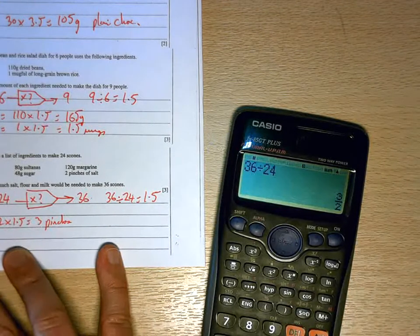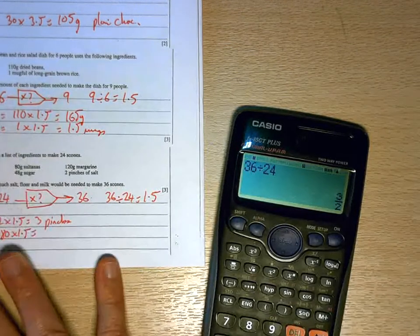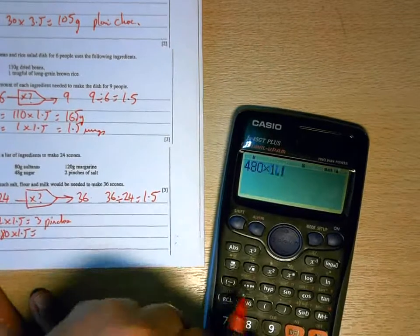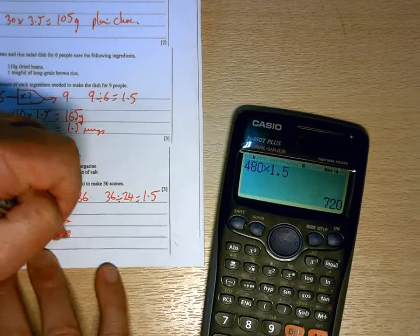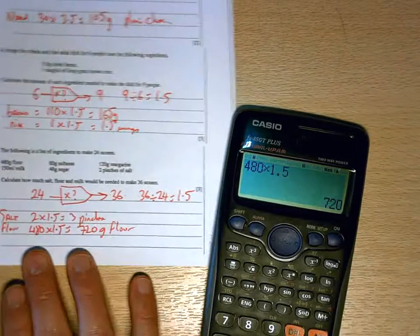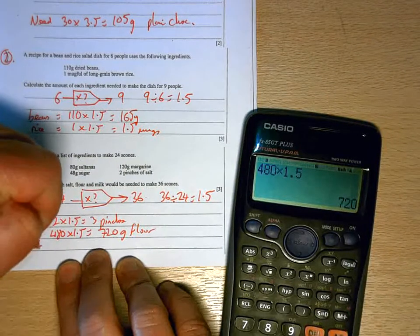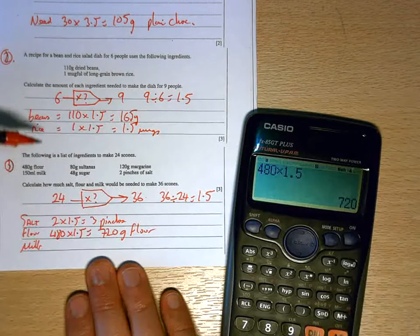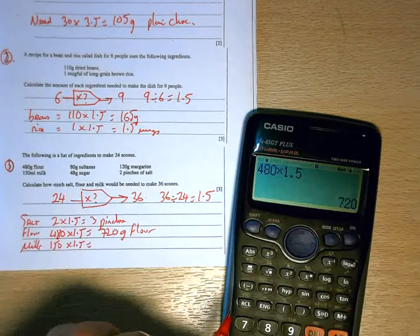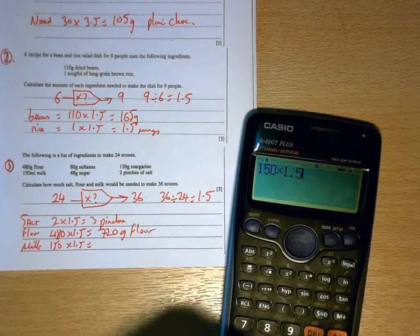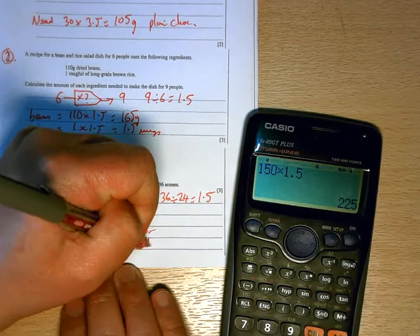Flour, 480 times 1.5. So we've got 720 grams of flour. And milk. We're going from 150 mil to 225 millilitres of milk.